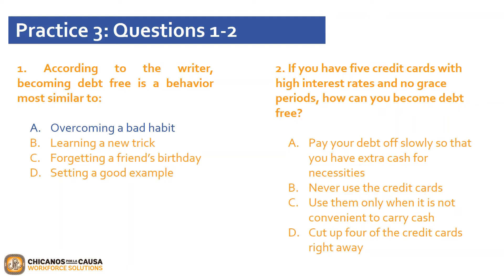Now let's look at question two. If you have five credit cards with high interest rates and no grace periods, how can you become debt-free? Is it A, paying your debt off slowly so that you have extra cash for necessities; B, never use the credit cards; C, use them only when it is not convenient to carry cash; or D, cut up four of the credit cards right away? The correct answer is B, never use the credit cards. The last paragraph implies that the author approves of using credit cards only once you have already gotten out of debt, and then only for convenience. Thus, if you are in debt, you should stop using your credit cards right away. You may now pause the video to complete and review questions three and four.